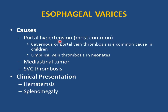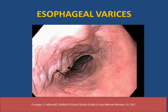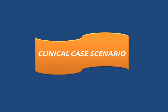Esophageal varices are caused by portal hypertension. Cavernous portal vein thrombosis is the most common cause of portal hypertension in children. Umbilical vein thrombosis in neonates is relevant — ask about previous umbilical vein catheterization in the NICU. Other causes include mediastinal tumor and superior vena cava thrombosis. Patients may present with hematemesis and splenomegaly. Diagnosis is by upper endoscopy. Management includes sclerotherapy and beta-blockers to prevent variceal bleeding.